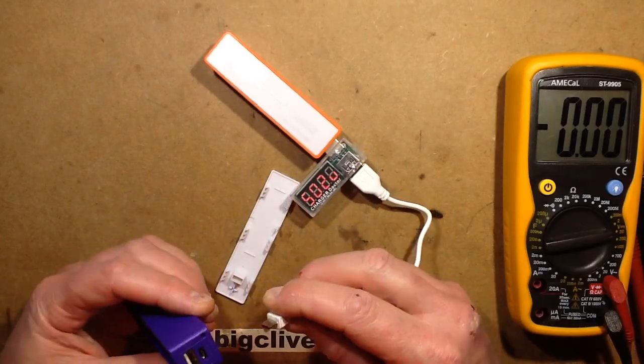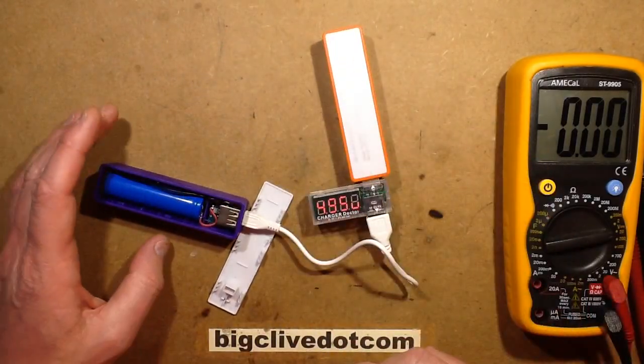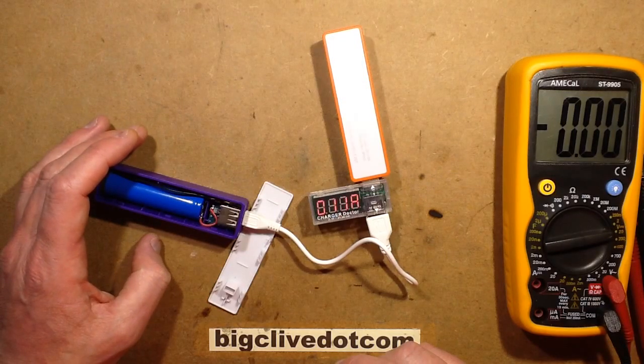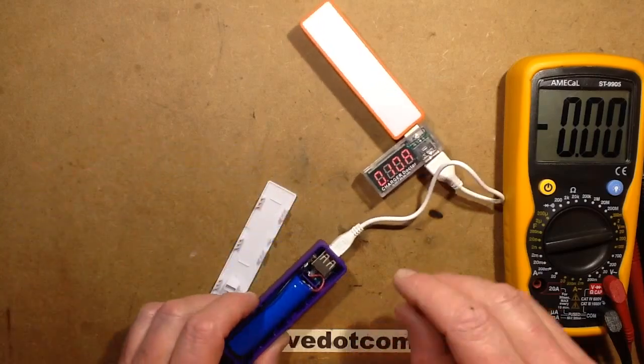So if you do plug a charger into it, let's see what sort of current flows. 100 milliamps, it is trying to put a charge into this.